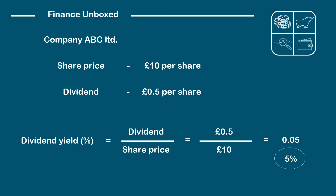So what does this 5% actually mean? It means for every £1 that an investor has invested in the business, they've received back 5%, or 5p, from the business as a dividend. In this case, as they bought £10 worth of shares, they've received 50p in dividends.